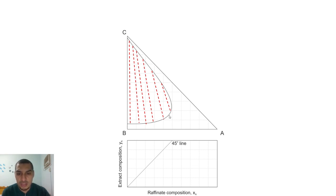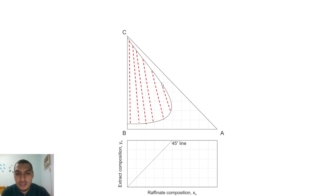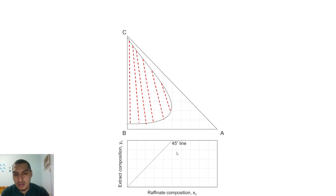The X represents a point on the raffinate side of the tie line on the ternary diagram. The X value does not change — it is read directly on the ternary diagram axis. However, the Y coordinate, which represents a point on the extract side, needs to be read on the perpendicular axis. To do this, we go down from the ternary diagram and then reflect onto the XY diagram's Y axis, flipping the value from being read on the X axis to being read on the Y axis.